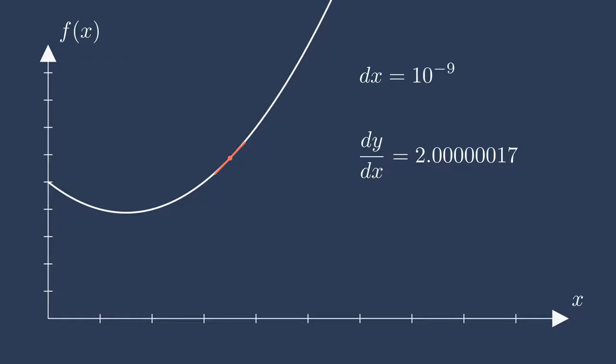This is fantastic. For the simple quadratic case, if we used a finite difference step size of 10 to the negative 9, we get a dy dx of 2.0000017. So this is a pretty good approximation for the derivative at this point. You can see the tangent line looks nice and it's right against the graph. So that's what first order finite differencing looks like in this very simplistic case.